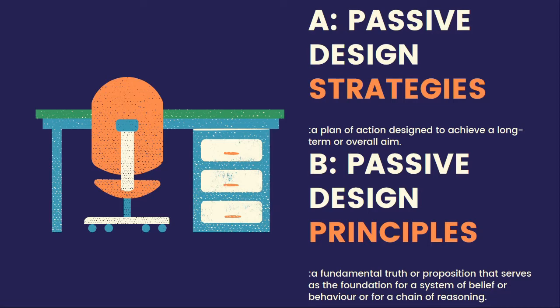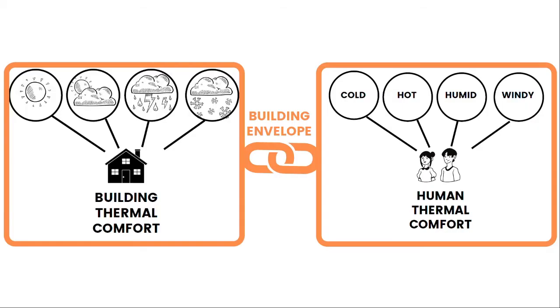This is the B section of passive design, which addresses passive design principles. A principle is a fundamental truth or proposition that serves as a foundation for a system, belief, behavior, or chain of reasoning, and this will be in connection to passive design.